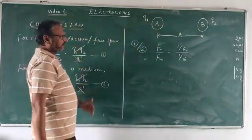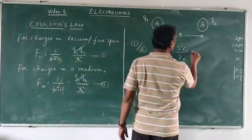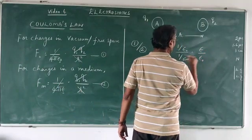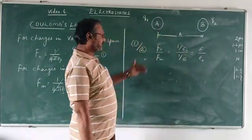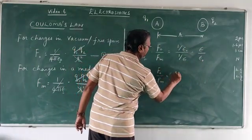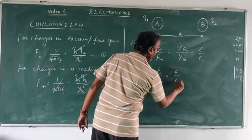Now from here, in this step, we move from epsilon upon epsilon 0. And this F0 upon Fm is equal to epsilon upon epsilon 0.